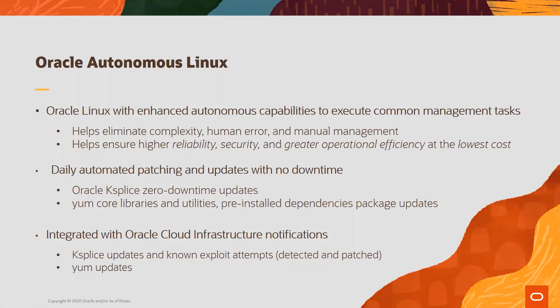Oracle Autonomous Linux is not a new Linux distribution. It is an Oracle Linux image with built-in autonomous management capabilities, and in the current release it includes self-patching capabilities, with additional autonomous capabilities to be added in upcoming releases.